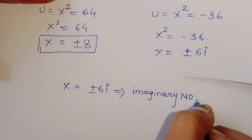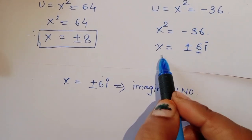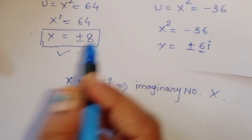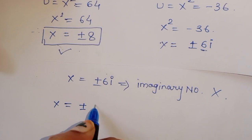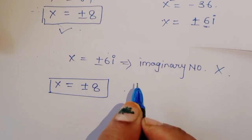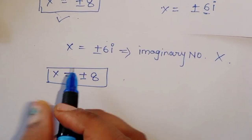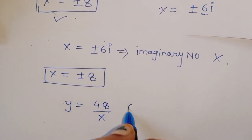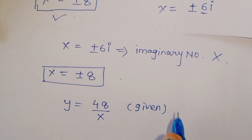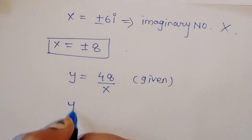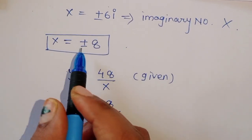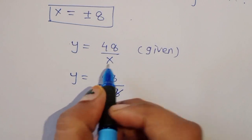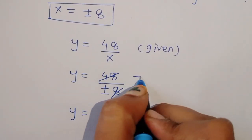Since x = ±6i is imaginary, the corresponding y values would also be imaginary, so we discard this case. We are left with x = ±8. Using y = 48/x, we get y = 48/(±8) = ±6.